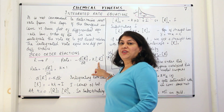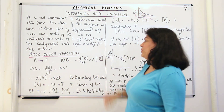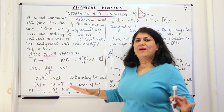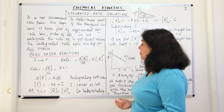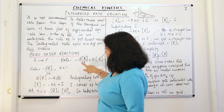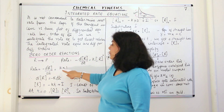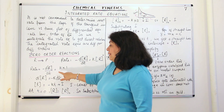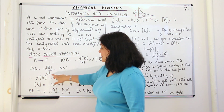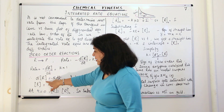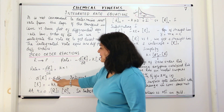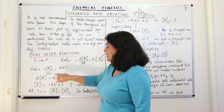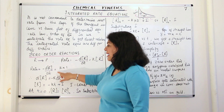The concentration of the reactant r is raised to the power of zero, and anything to the power of zero is one. So we can write: minus dr/dt = k × 1. Rearranging, we get dr = minus k dt.